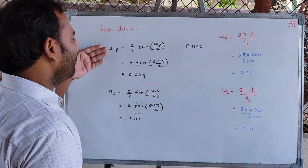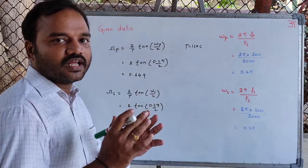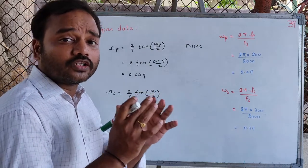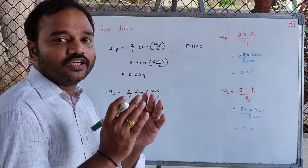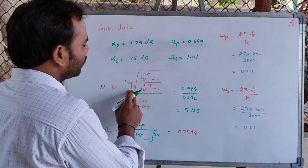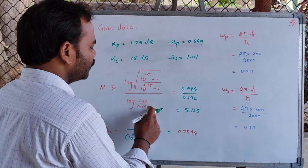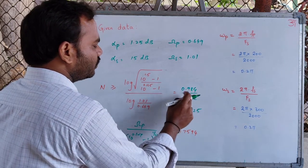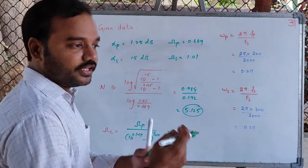We now have the analog passband frequency, analog stopband frequency, passband ripple, and stopband attenuation. Using these four values, we compute the order of the Butterworth filter required to meet the given specifications. The order N is greater than or equal to log(√((10^0.15 − 1)/(10^0.0125 − 1))) divided by log(stopband frequency / passband frequency). The numerator evaluates to 0.984, the denominator to 0.192, and their ratio is 5.125. Rounding up to the next higher integer gives N = 6.